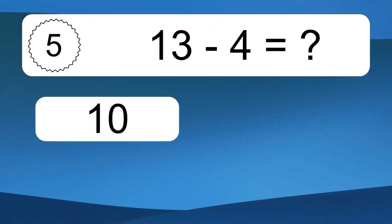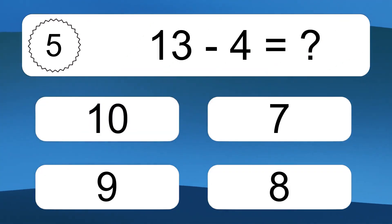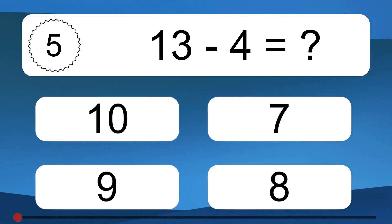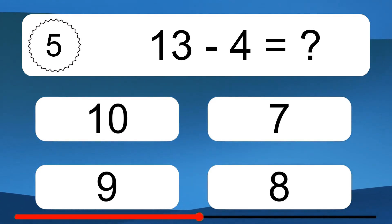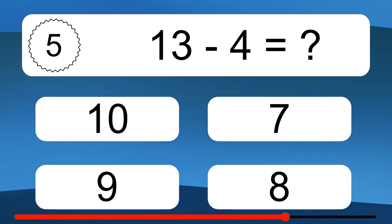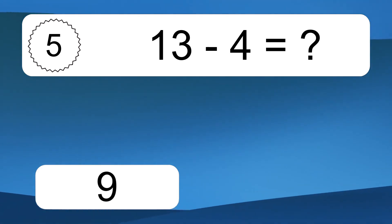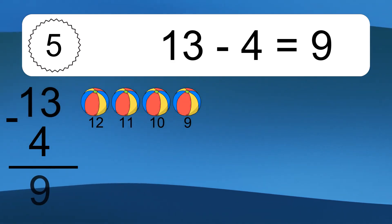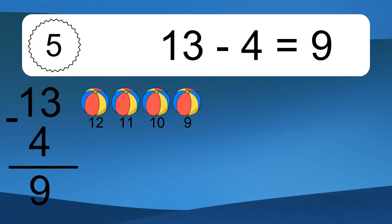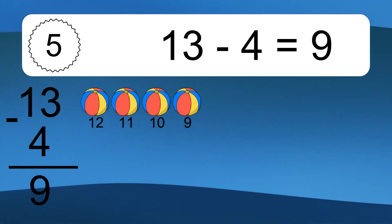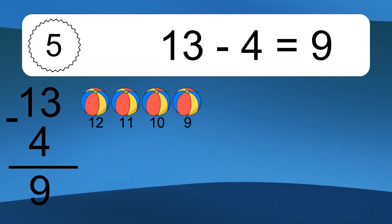13 minus 4 equals what? 13 minus 4 equals 9. Let's count it: 12, 11, 10, 9.